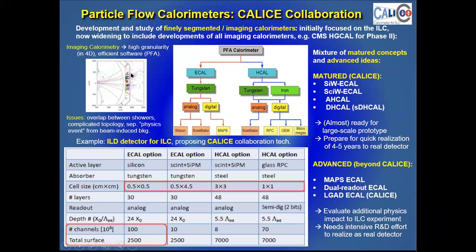Moving from gaseous detectors to calorimetry: the majority of work has been done by the CALICE collaboration, focused on the development of highly segmented imaging calorimetry, originally very focused on the LC but now widened to include all possible imaging calorimetry. An example is the HGCAL high-granularity calorimeter in the CMS Phase-2 upgrade as proof of concept. There are many different R&D lines ongoing, based on both mature concepts and advanced ideas presented at LCWS workshops.